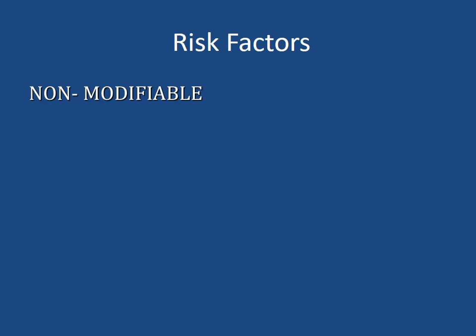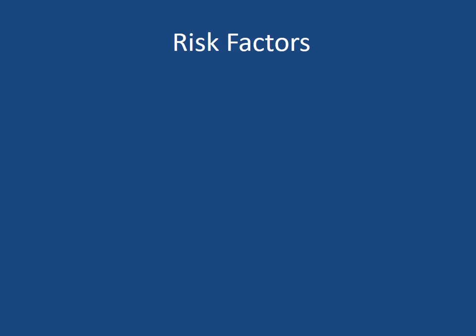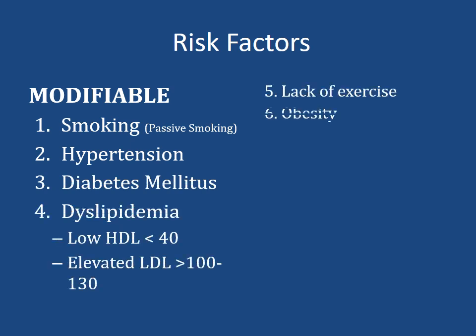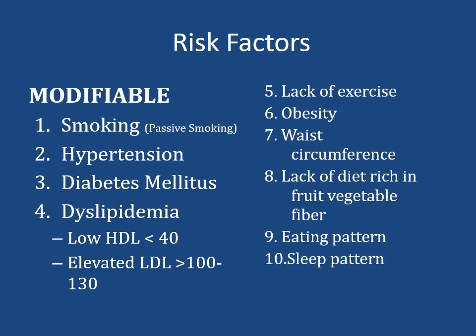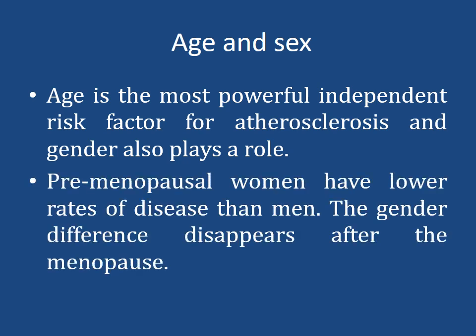Risk factors are of two types: non-modifiable and modifiable. Non-modifiable risk factors include age, sex, and family history with events in first degree relatives. Modifiable risk factors include smoking, hypertension, diabetes, dyslipidemia, lack of exercise, obesity, waist circumference, diet deficient in fruits and vegetables, eating pattern, and sleep pattern. Advancing age is the most powerful independent factor for atherosclerosis. Male gender is more prone to ischemic heart disease. Pre-menopausal women have lower rates than men, but this gender difference disappears after menopause.